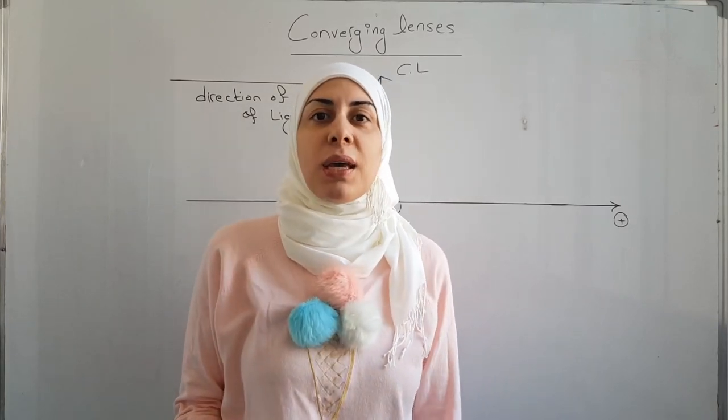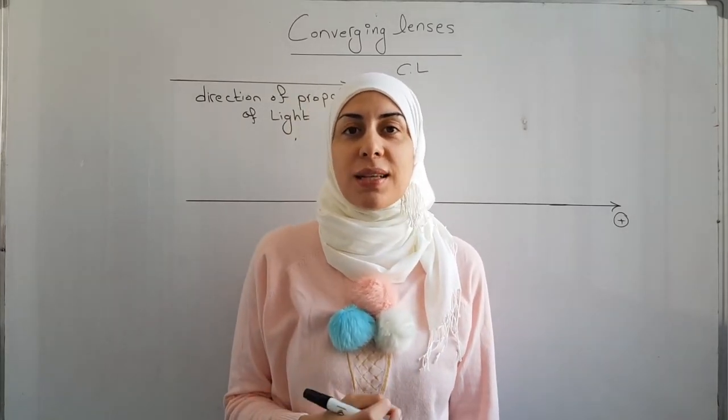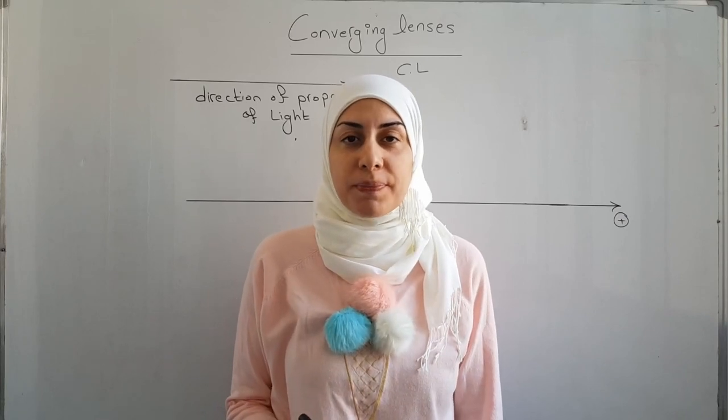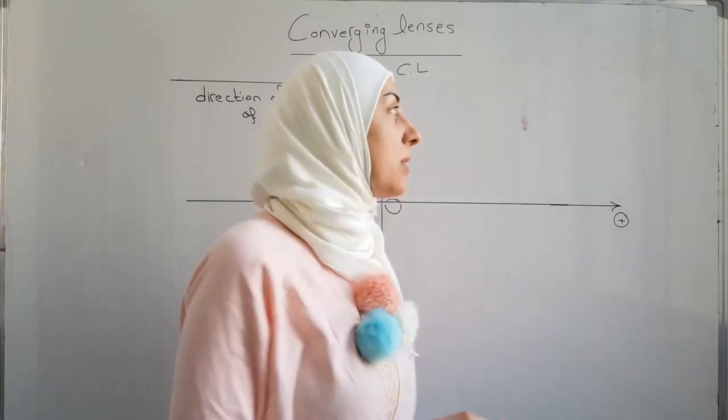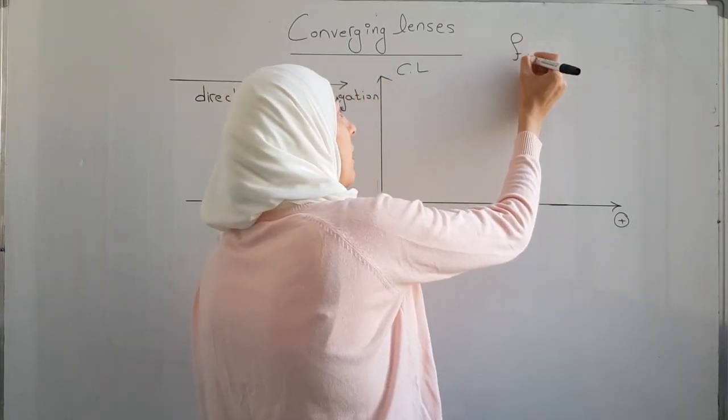Every converging lens is characterized by its focal length, and the focal length is a measure of how strongly this lens can converge light. The focal length is denoted by the lowercase letter f.